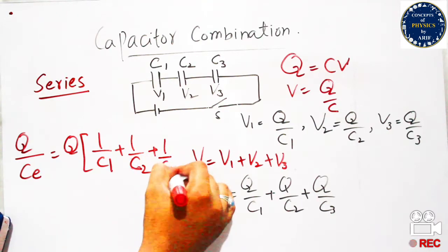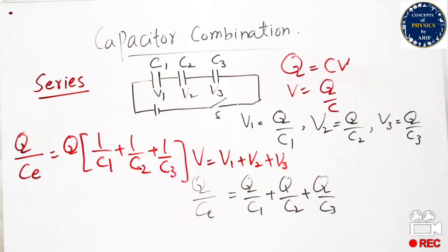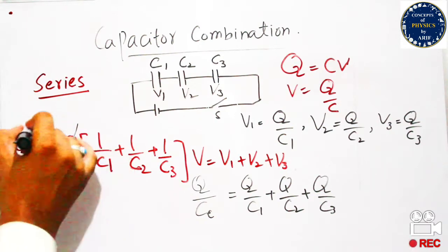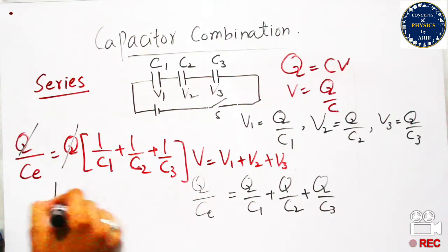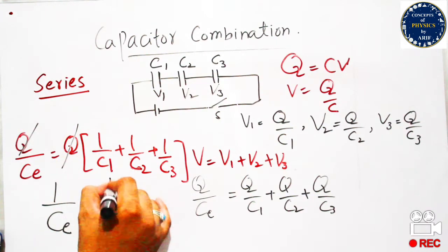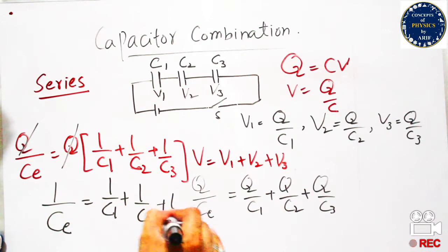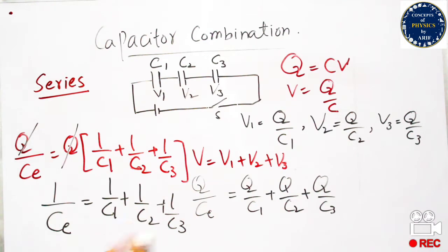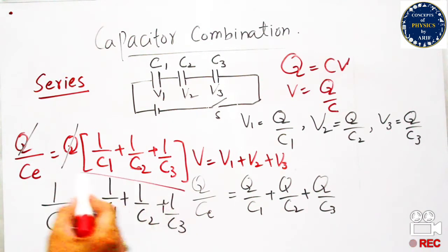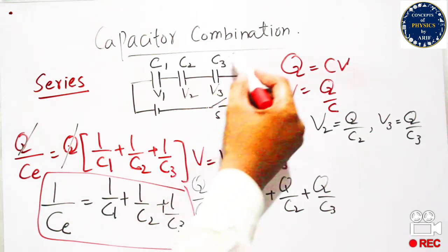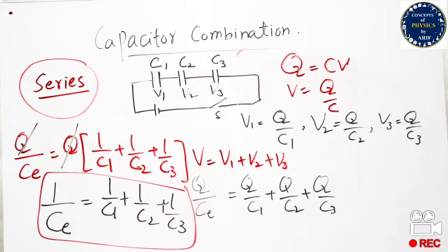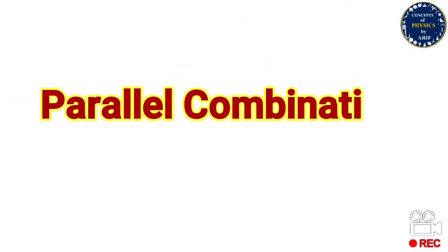Cancelling Q from both sides, the final expression for series combination of capacitors is: 1/Ce = 1/C1 + 1/C2 + 1/C3. It should be remembered that in the series combination of capacitors, the equivalent capacitance Ce is less than each individual capacitance, because of the inverse relationship.